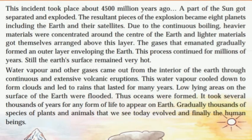This incident took place about 4500 million years ago. A part of the sun got separated and exploded. The resultant pieces of the explosion became eight planets including the Earth and their satellites. Due to the continuous boiling, heavier materials were concentrated around the center of the Earth and lighter materials got themselves arranged above this layer. The gases that emitted gradually formed an outer layer enveloping the Earth. This process continued for millions of years, till the Earth's surface remained very hot.